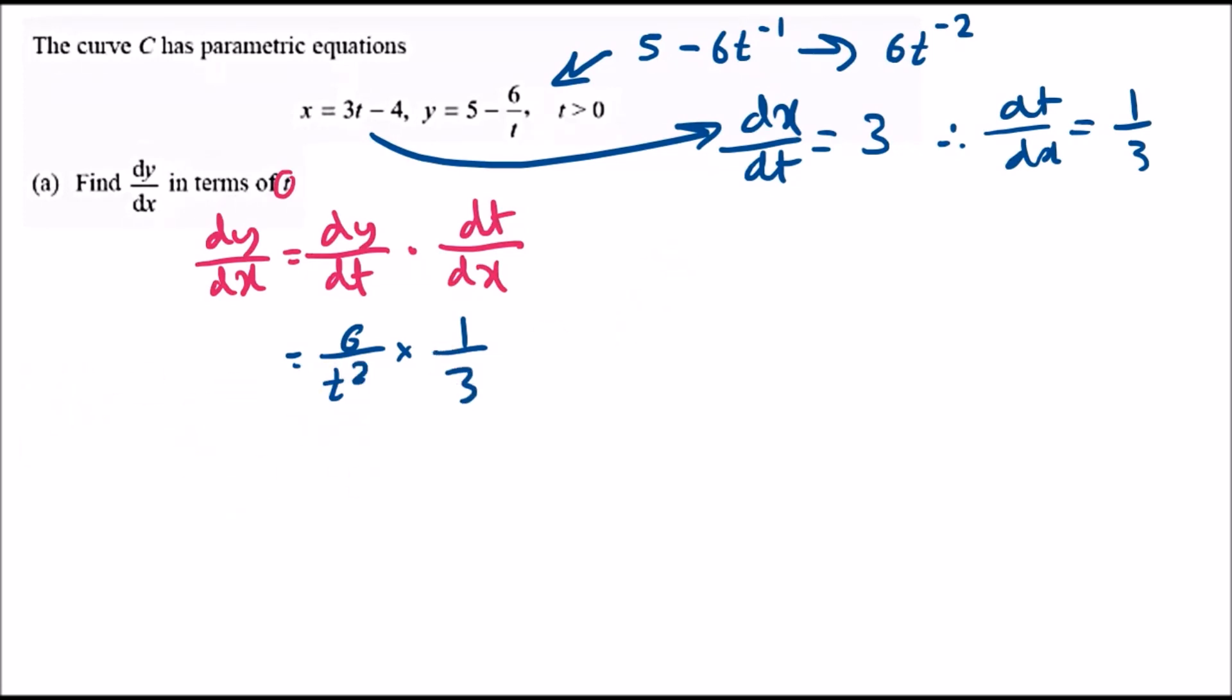Now we just simplify this. Do some cross simplification. 6 and 3 both go to 3, so that's once and twice. It's just literally 2 times 1 which is 2, and t squared times 1 is t squared. That's it, part a is complete.